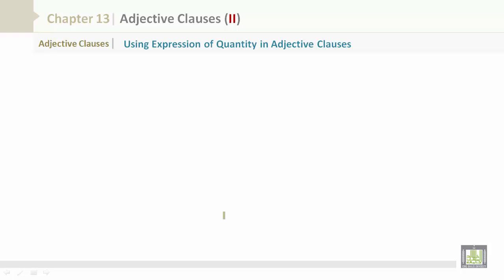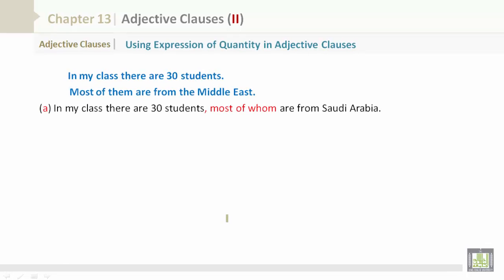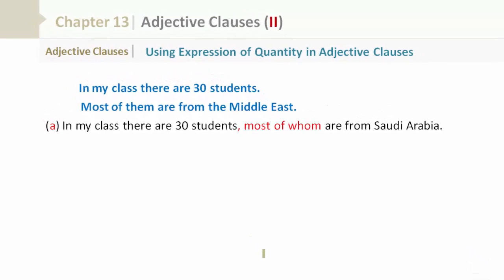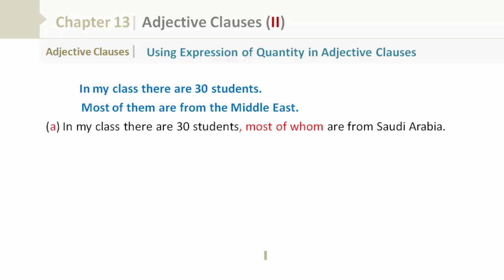Using expressions of quantity in adjective clauses. In my class there are 30 students, most of them are from the Middle East. In my class there are 30 students, comma, most of whom are from Saudi Arabia.